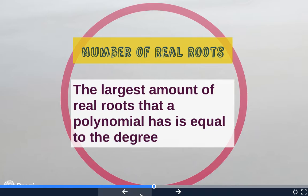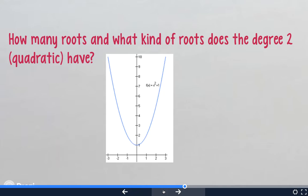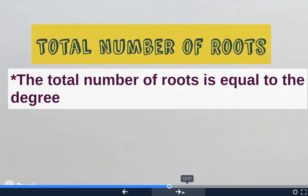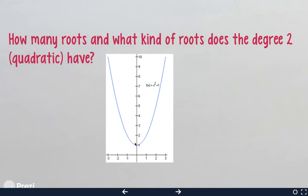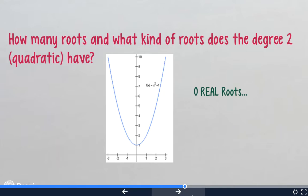There is also the Fundamental Theorem of Algebra, which states the total amount of roots is equal to the degree. This is slightly different — the largest amount of real roots equals the degree, but it doesn't have to equal the degree. Looking at a quadratic that never touches the x-axis: there are zero real roots. But since it's degree 2, it must have a total of two roots. So there must be some other kind of roots that are not real.